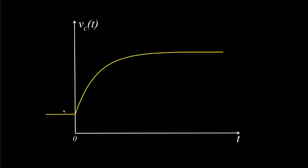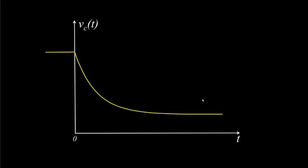The voltage across the capacitor will always look something like this. When the switch changes positions at time t equals zero, the voltage across the capacitor will smoothly change from one voltage to another. It may change from a smaller voltage to a larger voltage, but it's also possible to change from a larger voltage to a smaller voltage, depending on how the circuit is set up. If the switch has been opened or closed for a very long time before t equals zero, the voltage of the capacitor will stabilize at some value that we call Vc(0 minus), just before the switch is changed.